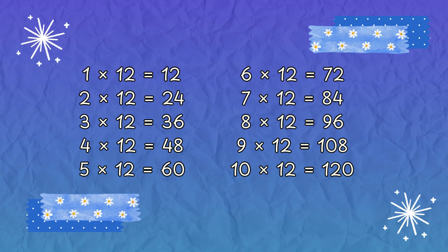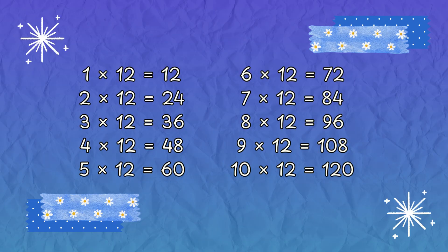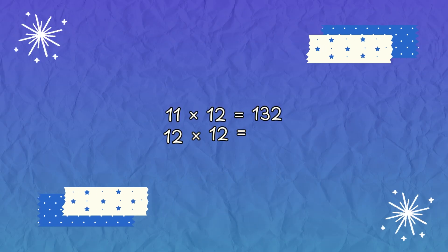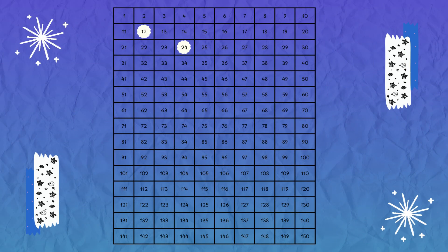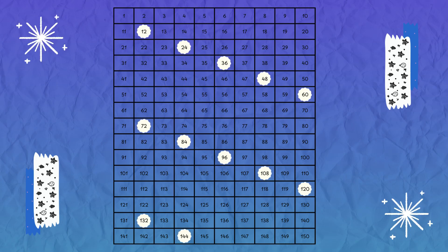9 x 12 is 108, 10 x 12 is 120, 11 x 12 is 132, 12 x 12 is 144. 12, 24, 36, 48, 60, 72, 84, 96, 108, 132, 144.